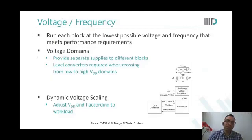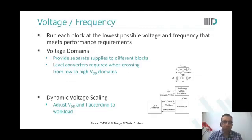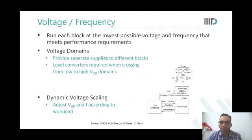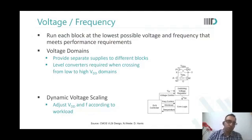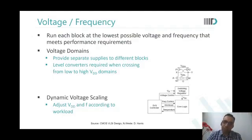This is the concept of dynamic voltage and frequency scaling. All of you have your cell phone with you — some of you might actually be attending this class on a cell phone. So do you think the cell phone application processor, which has a rated frequency of 2.5 gigahertz, always operates at 2.5 gigahertz?